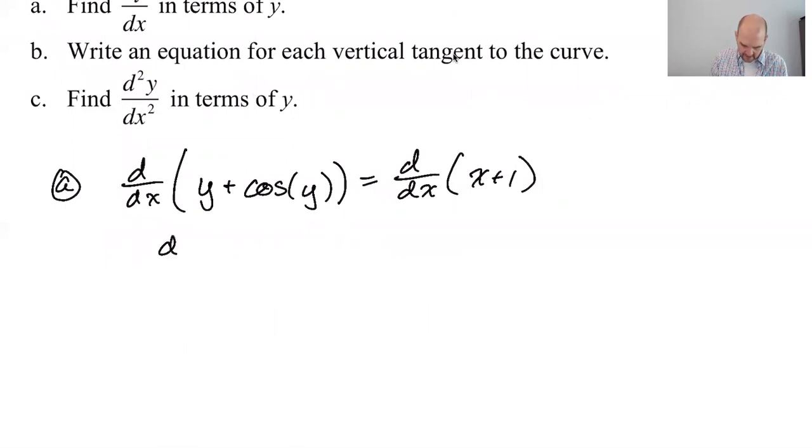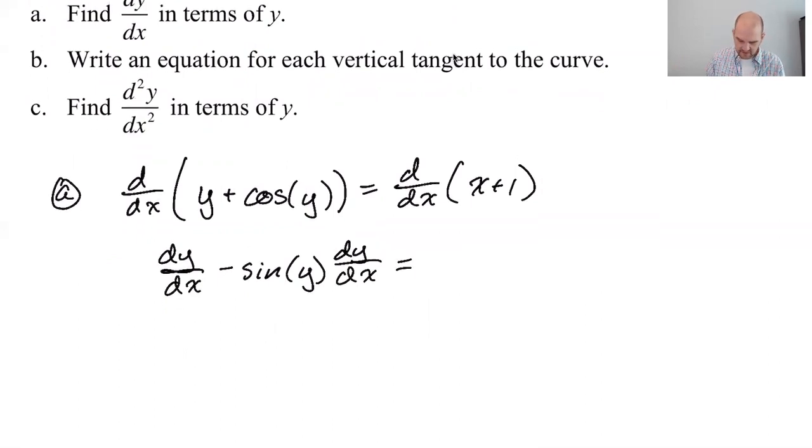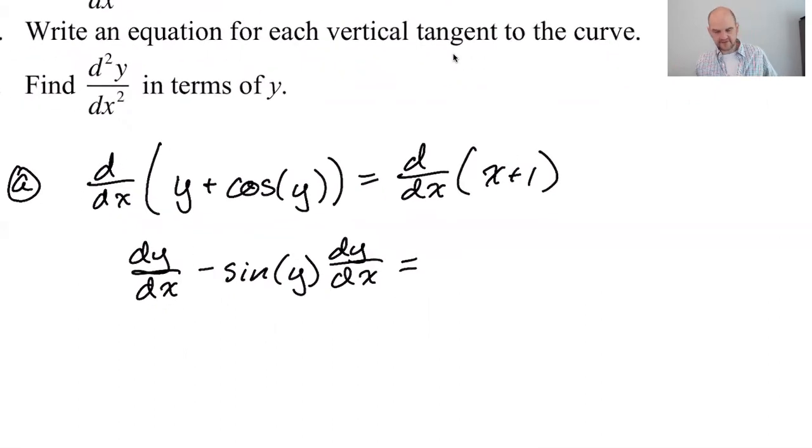So then on the right-hand side here, the derivative of y is dy/dx. The derivative of cosine of something is negative sine of that thing. But then chain rule gives me a dy/dx, because the derivative of y is dy/dx. And that's like the main mistake that I see people making with these, is they forget that y is a function of x.